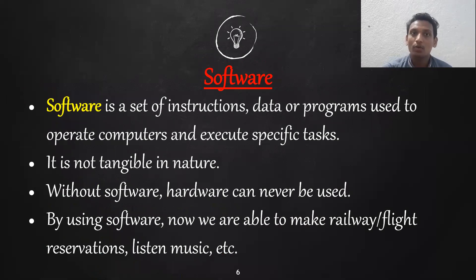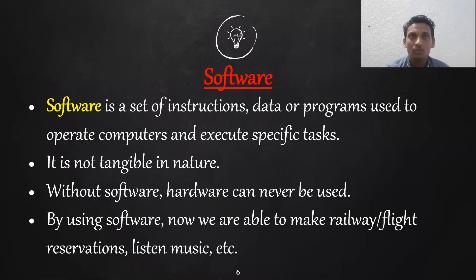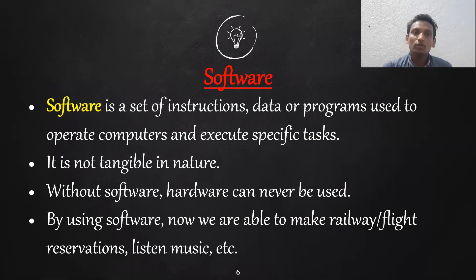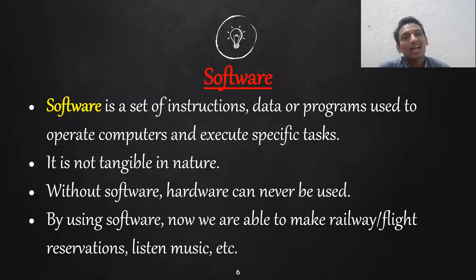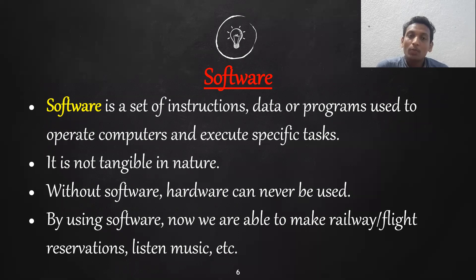Now software. You commonly download different types of software. Software can perform different types of calculations — for example, a calculator app on a computer or mobile can perform calculations. Software is used to do many tasks.